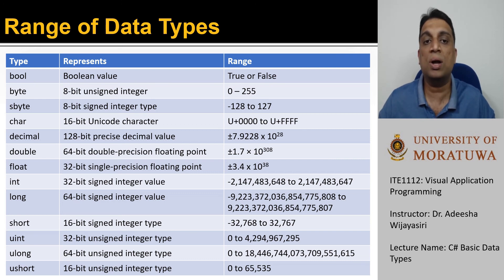Int, long and short are data types that can be used to represent signed integer values. And the range of each data type varies according to the number of bits used to represent the values. uint, ulong and ushort are the corresponding unsigned integer types.